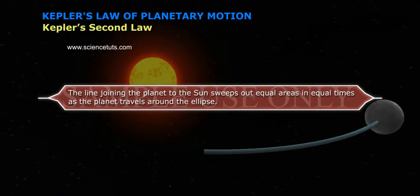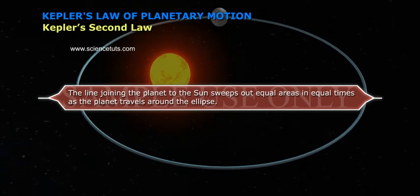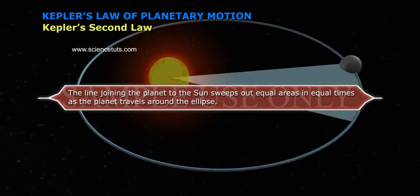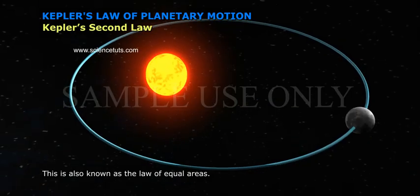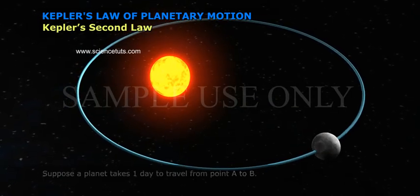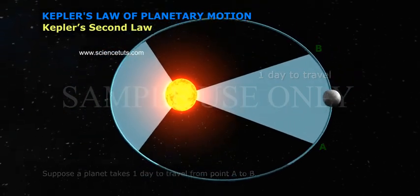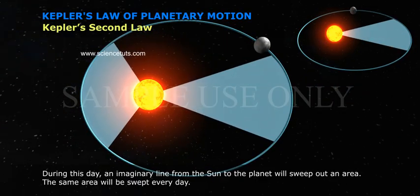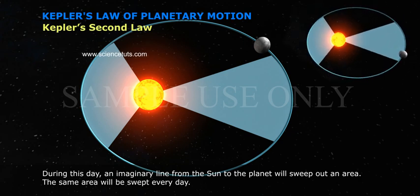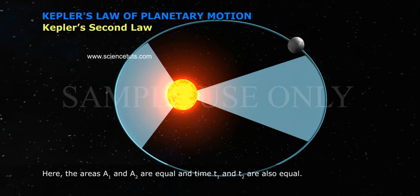Kepler's Second Law: the line joining the planet to the Sun sweeps out equal areas in equal times as the planet travels around the ellipse. This is also known as the law of equal areas. Suppose a planet takes one day to travel from point A to B — during this day, an imaginary line from the Sun to the planet will sweep out an area. The same area will be swept every day. Here, the areas A1 and A2 are equal.